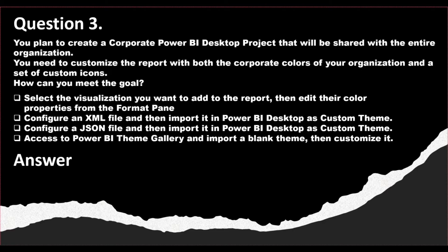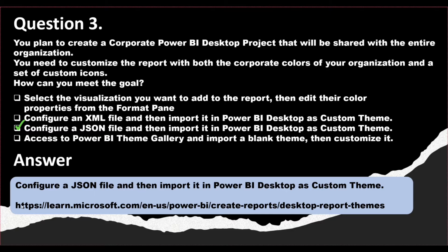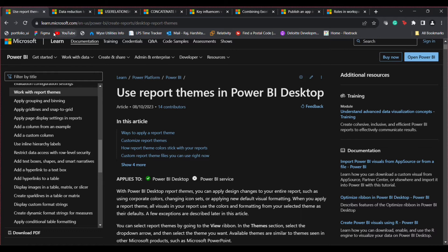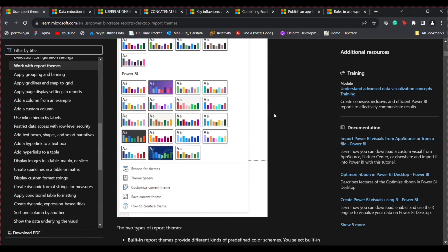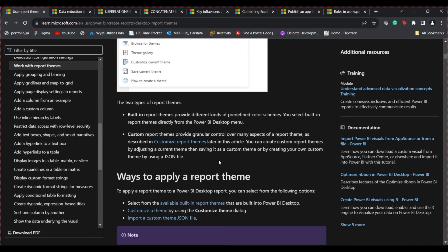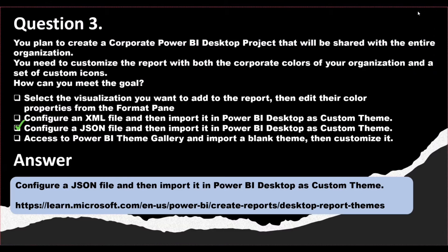The answer is to configure a JSON file and then import it into Power BI Desktop as a custom theme. You must remember that in most of these questions the answer is always closer to the JSON file, because JSON is the format used for importing custom themes into Power BI Desktop. If you go to the Microsoft Learn website on report themes in Power BI Desktop, you will confirm that JSON files are always required.